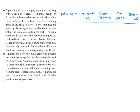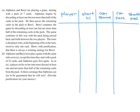Alphonse goes first with 7 cards. He can remove 1, 2, or 3 cards — not 4, because that would be more than half of 7. So he can pass 6, 5, or 4 cards to Beryl. We'll focus on Beryl's strategy, so we'll determine what she should pass based on what Alphonse does.